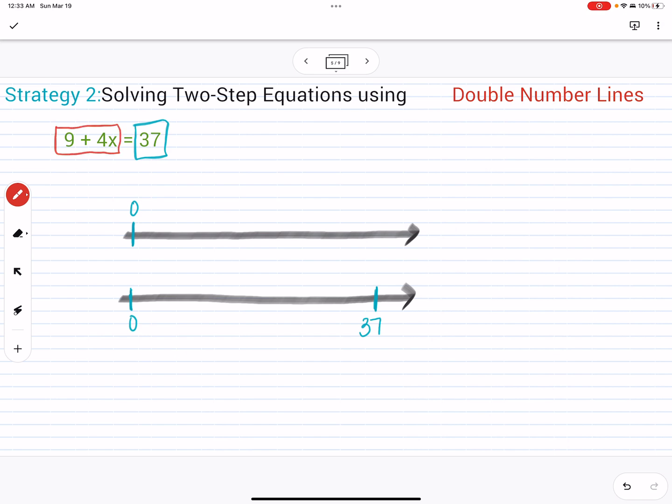If I know that this equals 37, then when I come up here, I'm going to mark the line that is equal. Remember, these two are equal. This top part is going to represent nine plus four X.